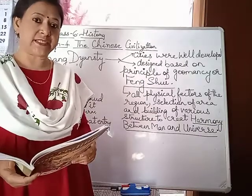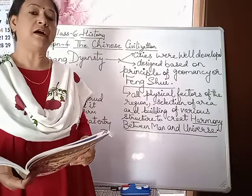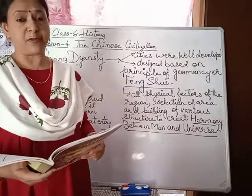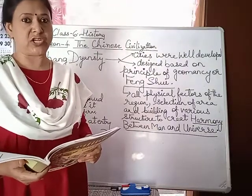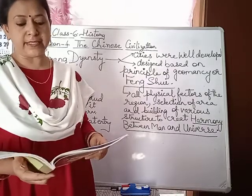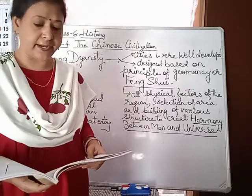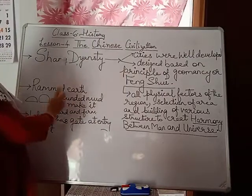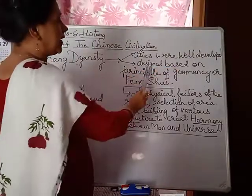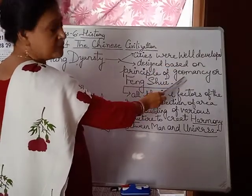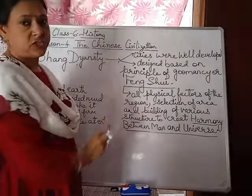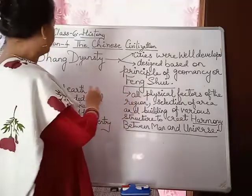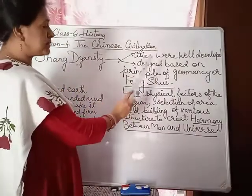Children, the Chinese people started building villages and living in the types of cities designed by the Shang dynasty. These cities were specifically designed using the principle of geomancy, or feng shui. Even today, people are using feng shui, just as they did during the Shang dynasty period.